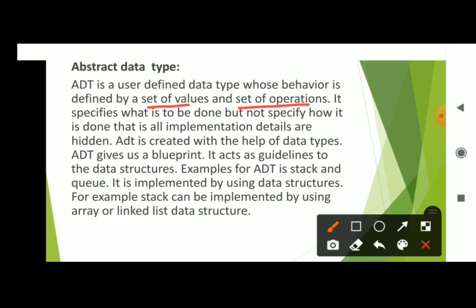ADT defines a set of values and a set of operations. It specifies what is to be done, but not how it is to be done — all implementation details are hidden. This is the concept of abstraction in ADT: the back-end implementation is hidden. ADT is created with the help of data types.